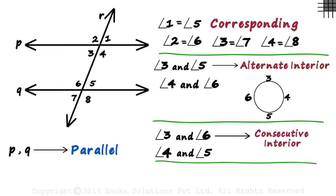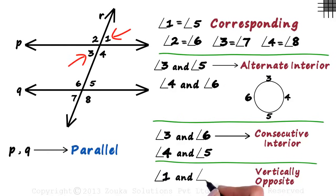And the last types of angles that are formed are vertically opposite angles. Angles one and three are called vertically opposite angles. In all, there are four pairs of vertically opposite angles. Apart from angles one and three, we have angles two and four, angles five and seven, and angles six and eight as the other three pairs. And vertically opposite angles are always equal.